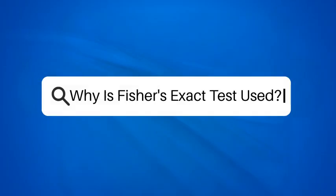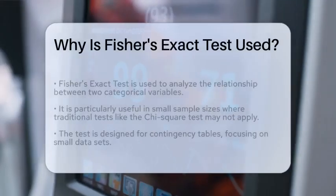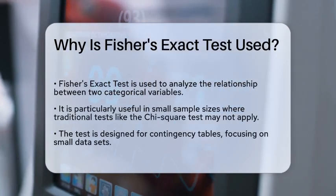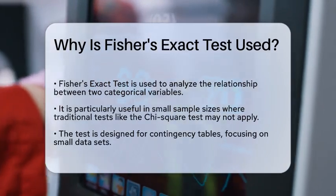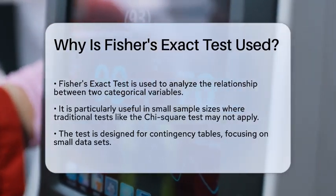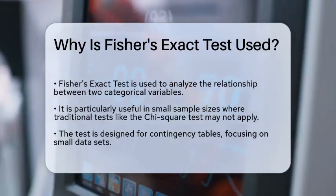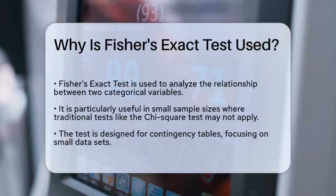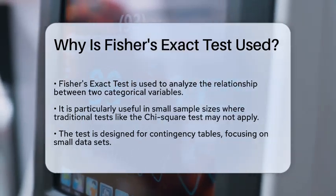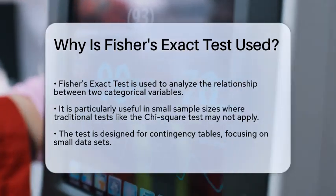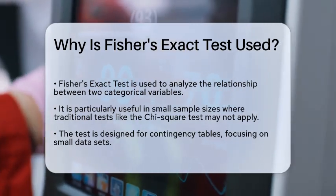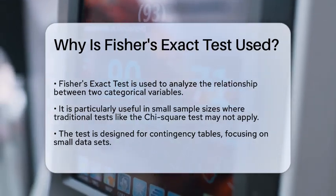Why is Fisher's Exact Test used? Imagine you are a researcher trying to determine if there is a relationship between two categorical variables in a small sample size. You might find yourself in a situation where traditional statistical tests, like the chi-square test, are not suitable due to the limited amount of data. This is where Fisher's Exact Test comes into play.